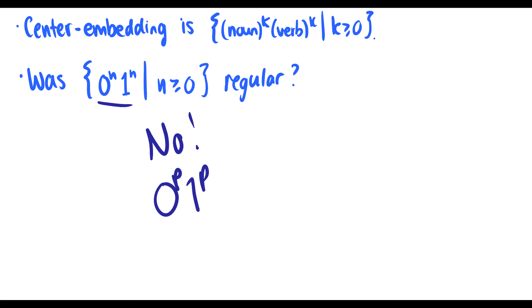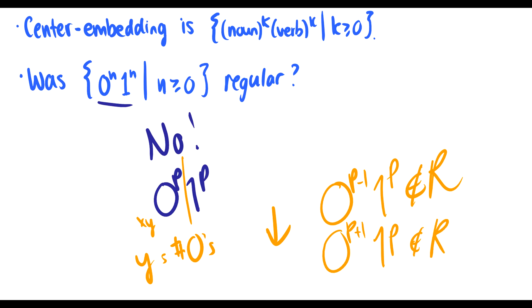If you took 0 to the P, 1 to the P, we have to find our x and y before the pumping length P here. This means we have some number of zeros equal to y. If we pumped it down, we'd have 0 to the P minus 1, 1 to the P, which is not in the regular language. If we pumped it up, we'd get 0 to the P plus 1, 1 to the P, which is also not in our regular language. So 0 to the N, 1 to the N is not regular.